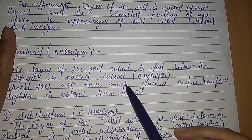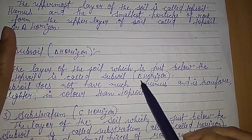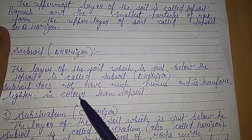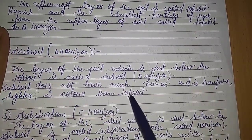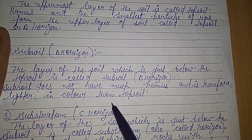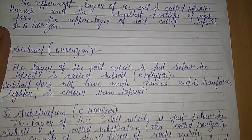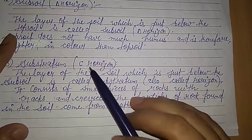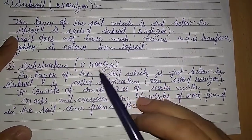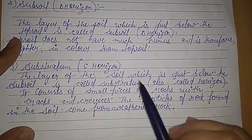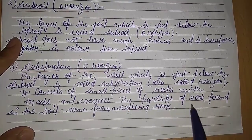The next layer is subsoil, also known as B horizon. The layer of soil just below the topsoil is called subsoil or B horizon. Subsoil does not have much humus and is therefore lighter in color than topsoil.